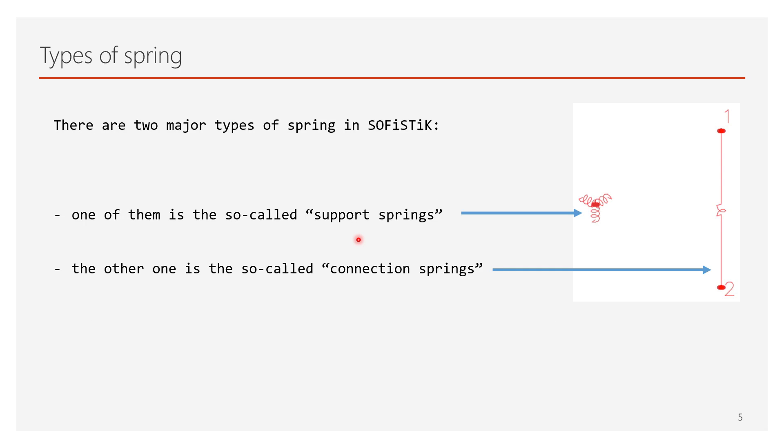In general, the spring elements can be categorized into two major types in SOFiSTiK. One of them is the so-called support springs and the other one is the so-called connection springs.